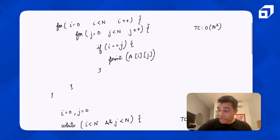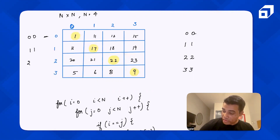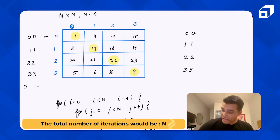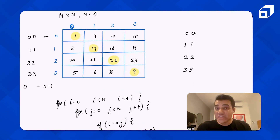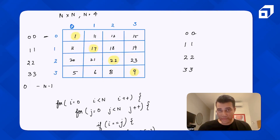The time complexity of this approach is O(n) because we are printing only one element per row — element at (0,0) in the first row, (1,1) in the second, (2,2) in the third, and (3,3) in the fourth. The total number of iterations is n, since one element is printed from each row from 0 up to n-1. This is how the main diagonal elements are printed.